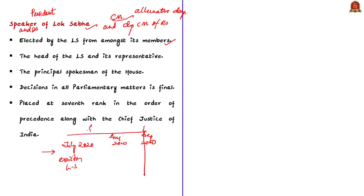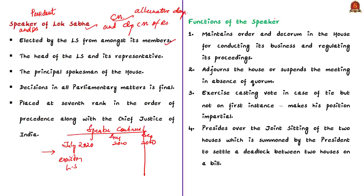The speaker is the head and representative of Lok Sabha, guardian of the powers and privileges of members, and the principal spokesperson of the house, with decisions in all parliamentary matters being final. In order of precedence, the speaker is placed at the seventh rank along with the Chief Justice of India — even above all cabinet ministers except the prime minister and deputy prime minister. The speaker derives powers and duties from three sources: the Constitution of India, the rules of procedure and conduct of business of Lok Sabha, and parliamentary conventions.